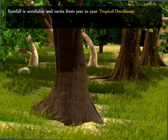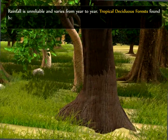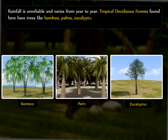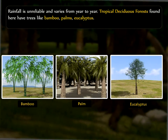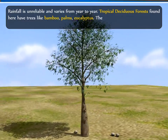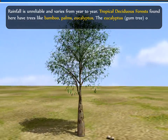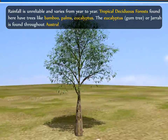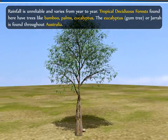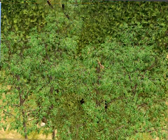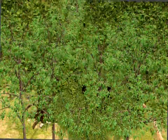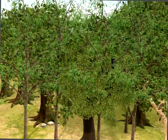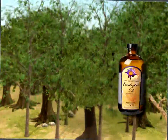Tropical deciduous forests found here have trees like bamboo, palms, and eucalyptus. The eucalyptus, or gum tree or jarrah, is found throughout Australia. With over 500 varieties, it is the leading timber tree of Australia and also yields valuable oil.